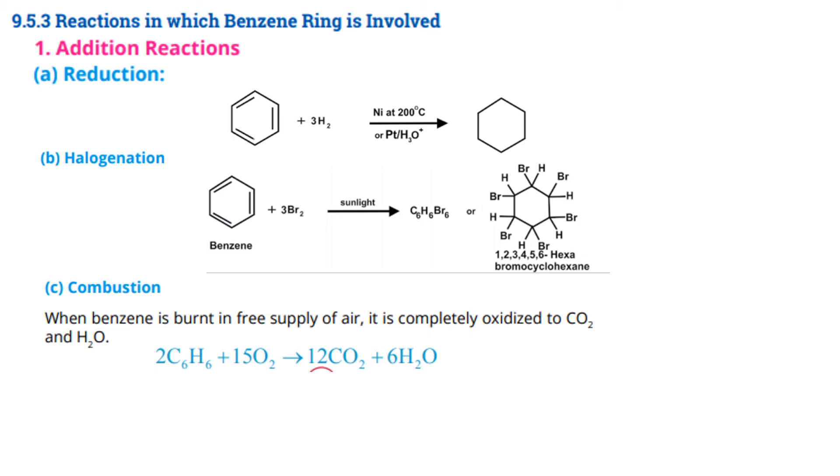So these double bonds changed to single, benzene became cyclohexane. Second is halogenation. If we have benzene and add three Br2 in presence of sunlight - if we add halogen in presence of AlCl3, reaction occurs at one place which we called halogenation. But if done in sunlight presence, at every corner of benzene, since one H was already present, one halogen will also come. When one halogen comes at each corner, we name it 1,2,3,4,5,6. Since bromine is at every corner, hexabromo cyclohexane.